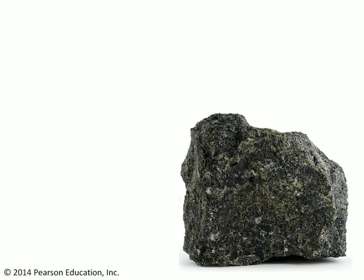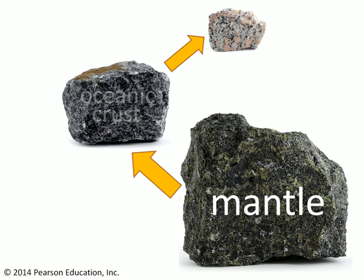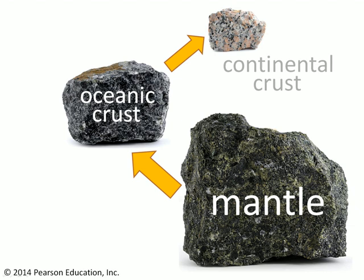Let's test yourself here. How can we relate this rock — the peridotite of the mantle — to this rock and to this rock? Hopefully you answered that peridotite is the rock that makes up the mantle. By partially melting the mantle, we can generate the rock that makes up the oceanic crust, basalt, and by partially melting that, we can end up producing the rock that dominates the continental crust, which is granite.